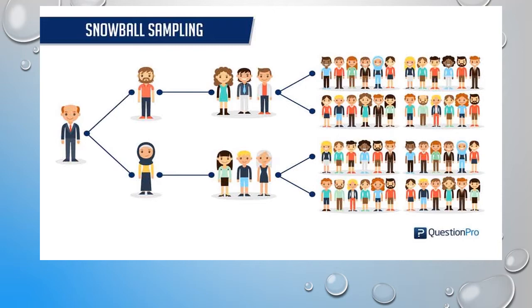Every single person is introducing another five persons. That is what makes it like a chain — chain referral sampling.